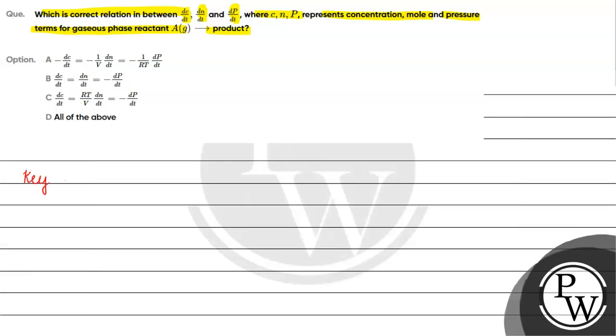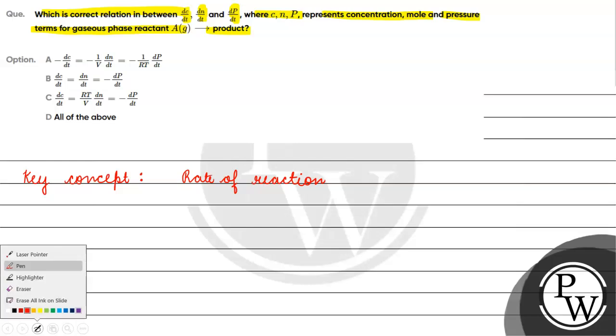The key concept for this question is rate of reaction. Rate of reaction is basically change in concentration of the reactants or products per unit time. Rate of reaction is change in concentration of reactants or products per unit time.